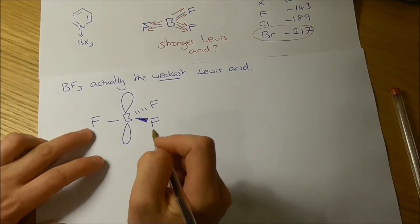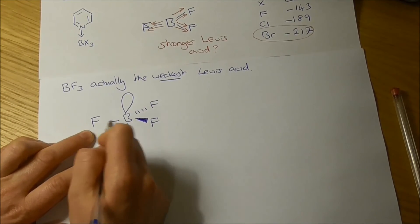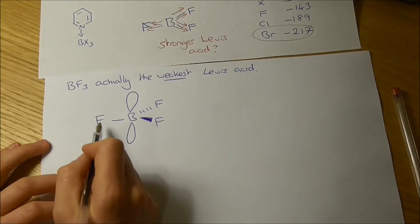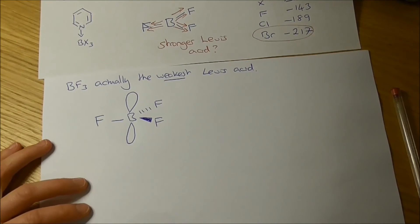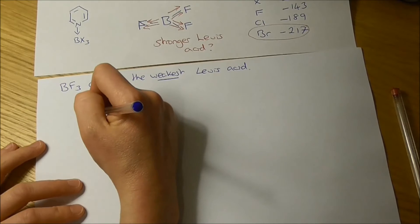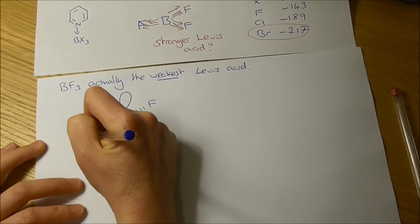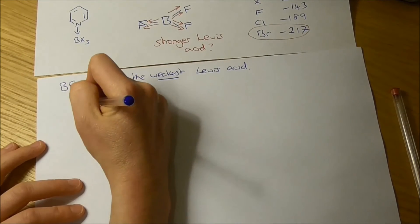Now, what we know about fluorine, fluorine's sharing one of its electrons with the boron to make this covalent bond here, but fluorine's also got six other electrons, and those six other electrons are sitting around the fluorine as lone pairs.